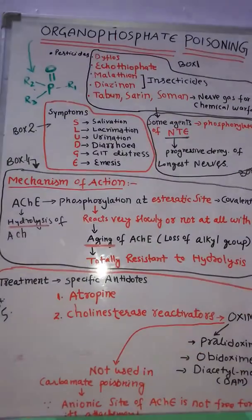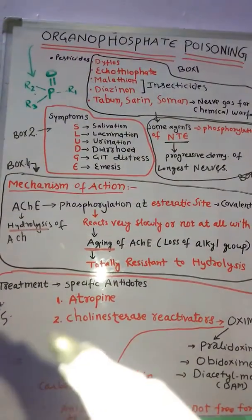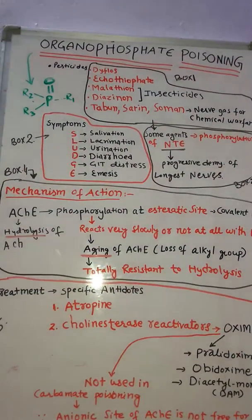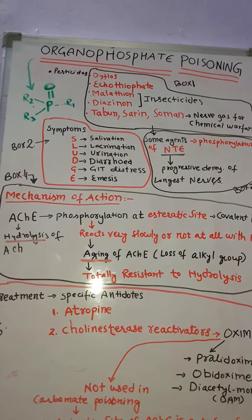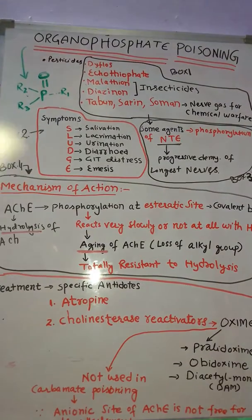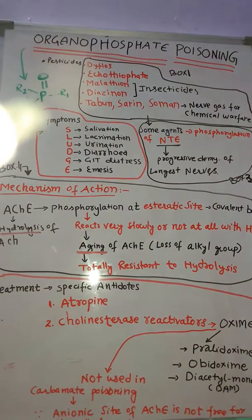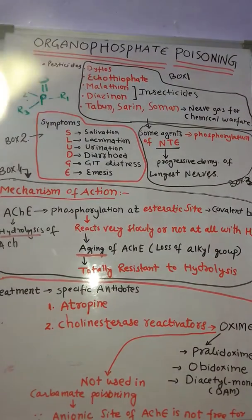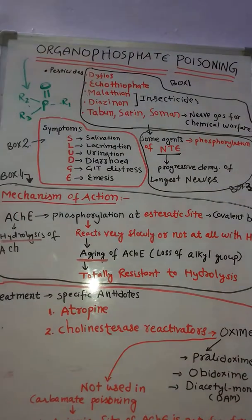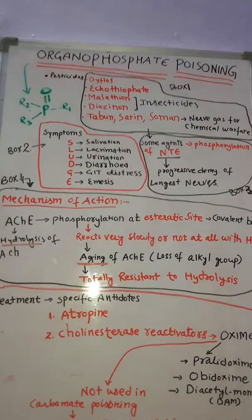This is the general structure for organophosphates. Here you can see the phosphorus with a double bond to oxygen, along with alkyl groups R1, R2, and R3.